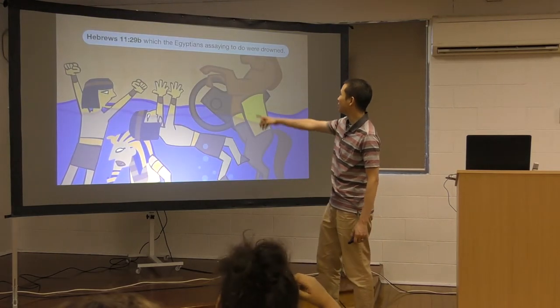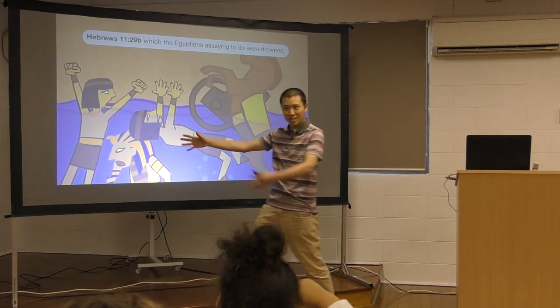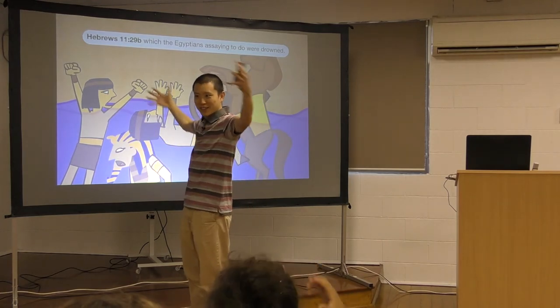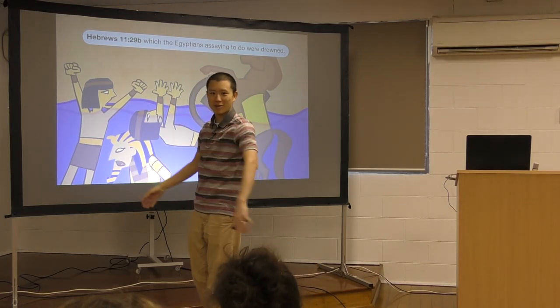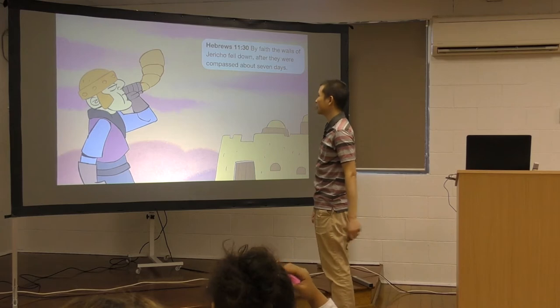As by dry land, which the Egyptians are saying to do with drown. So the Egyptians tried to follow them. And what happened? Whoosh! The water came in and drowned on them. They couldn't chase them because God was on their side.